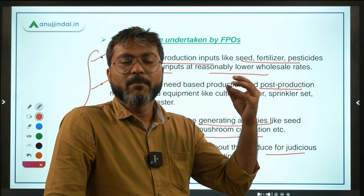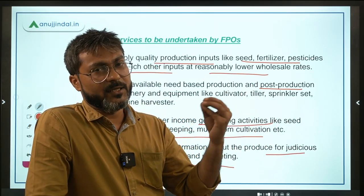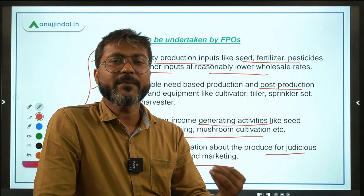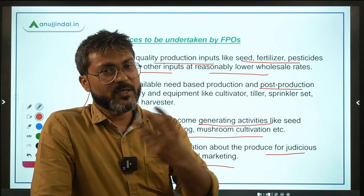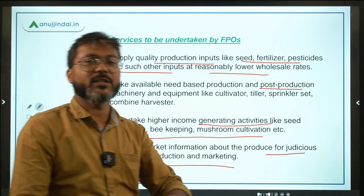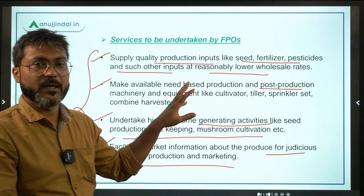FPOs will also facilitate market information about the produce for judicious decision-making in production and marketing. Farmers will know how much demand exists for a particular product in the market, and based on that information, they will decide what to grow. This market information will be provided by the Farmer Producer Organization.